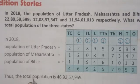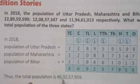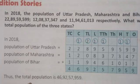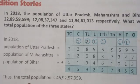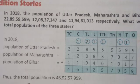Thus the total population across the 3 states is: reading place by place — ones, tens, hundreds, thousands, ten-thousands, lakhs, ten-lakhs, crores, ten-crores — the total is 46,92,57,959. This is the total population combining all 3 states. It is clear. We will meet again with the next topic in the next video.